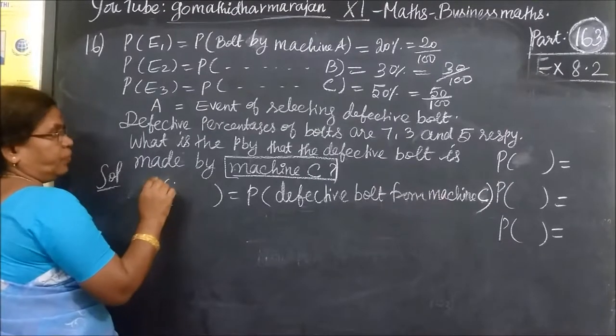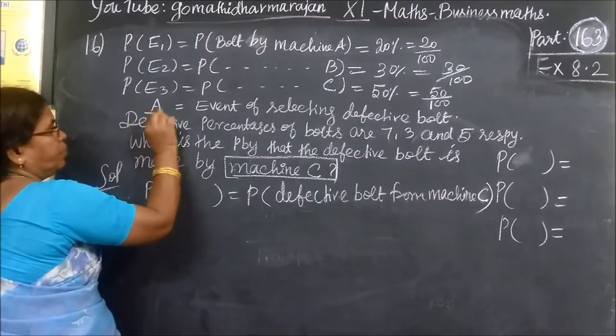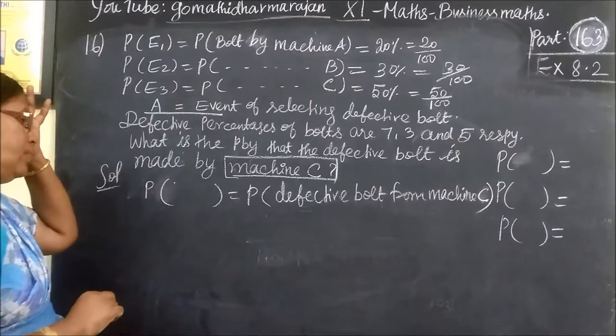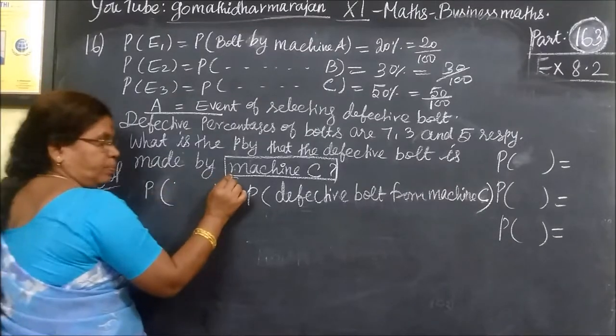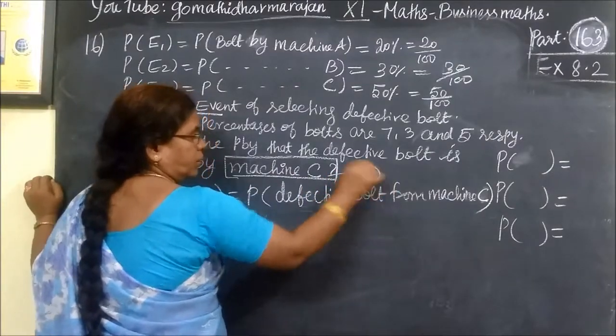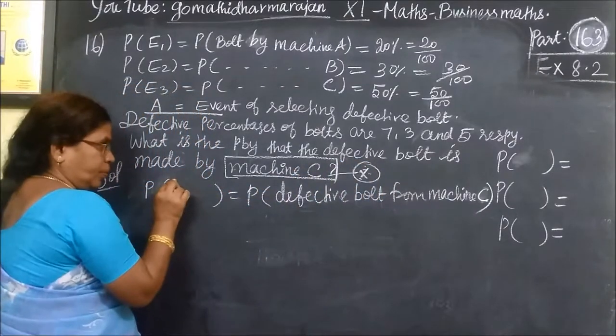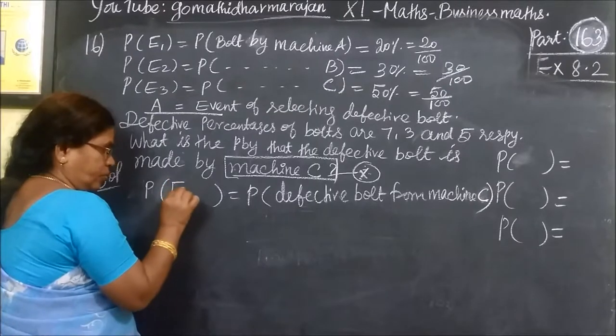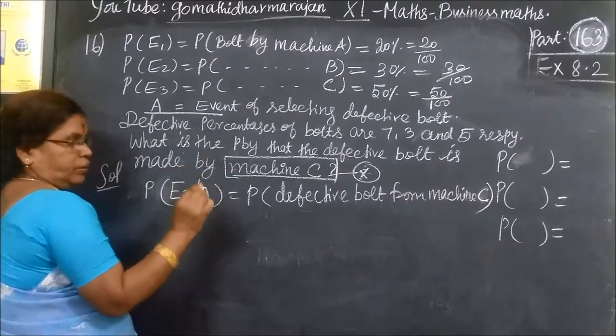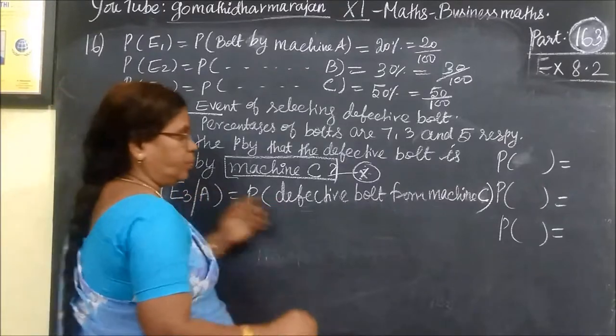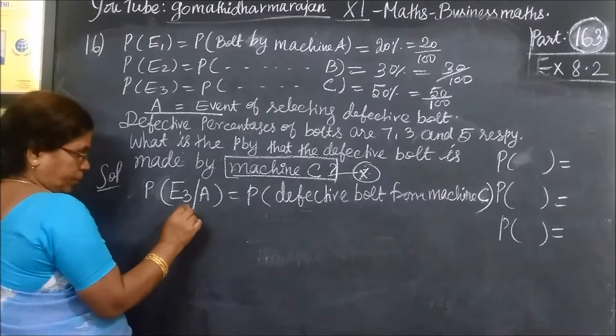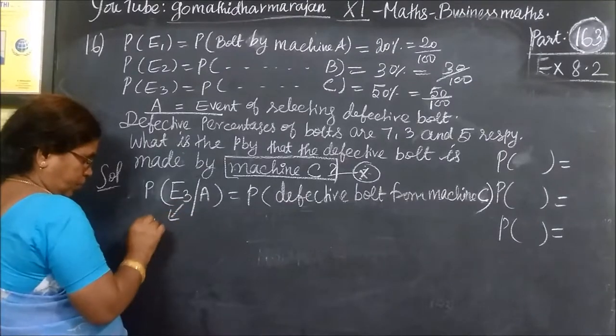So, probability of defective bolt, selecting defective bolt. If we are using machine C, we will use E3. Now, the event is A - defective bolt from machine. This is A. This is important.